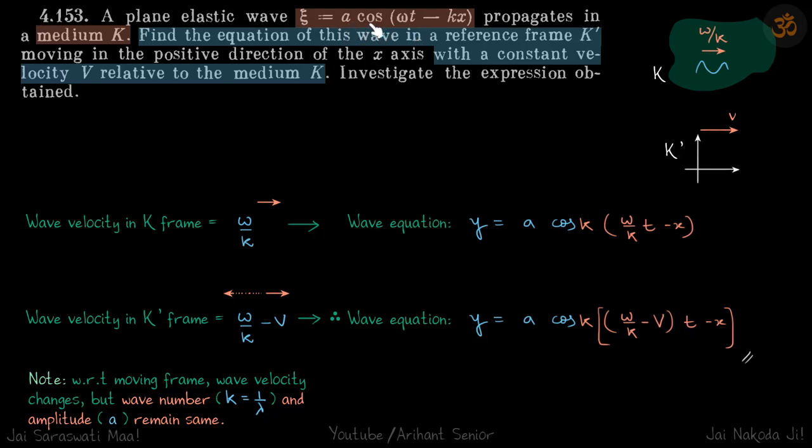We have this wave a cos(ωt - kx) in medium K. So let's say this is medium K where we have some waveform, sinusoidal waveform, that's moving towards right with velocity ω/k, that we know from this equation.